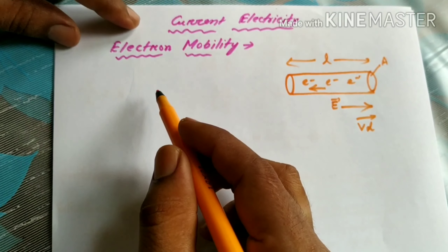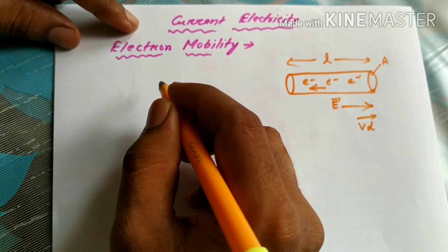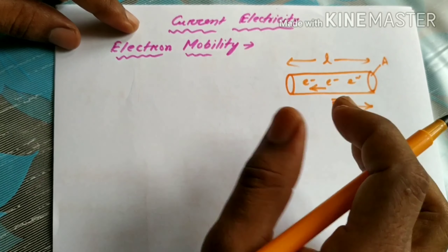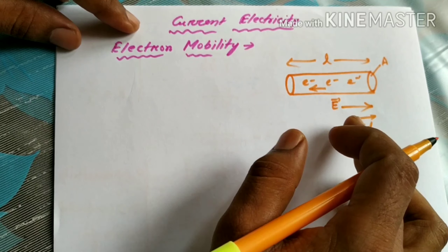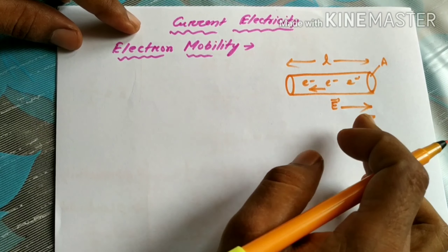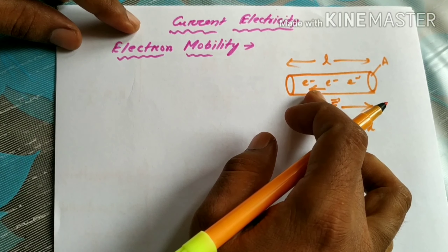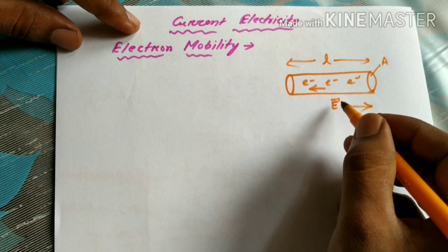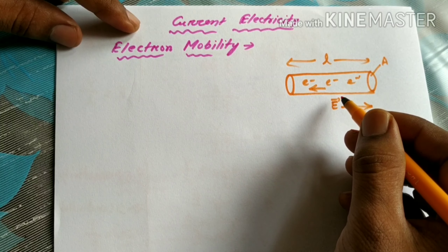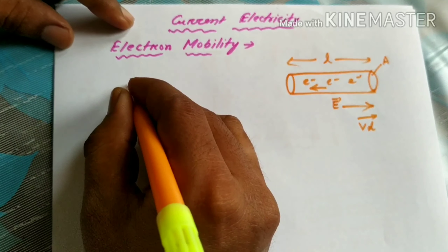Regarding electron mobility, I will start with the definition. Electron mobility is defined as the drift velocity of an electron, or free electron, per unit applied electric field. This is simply called electron mobility.